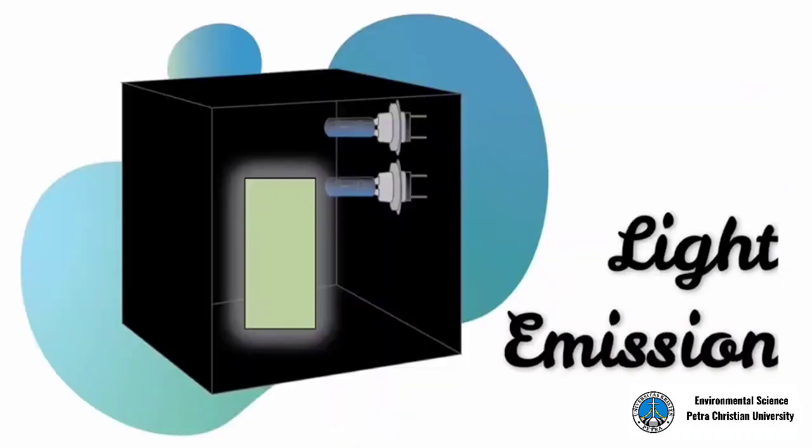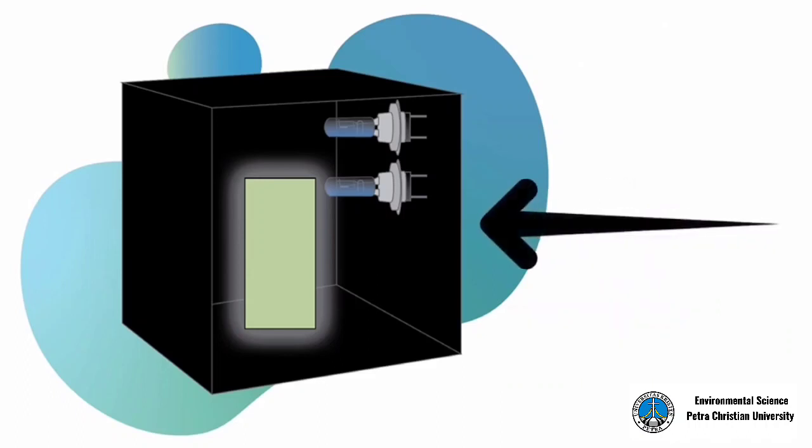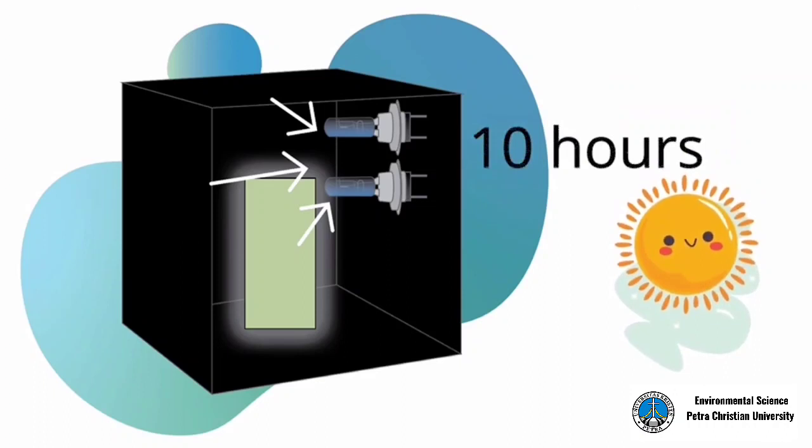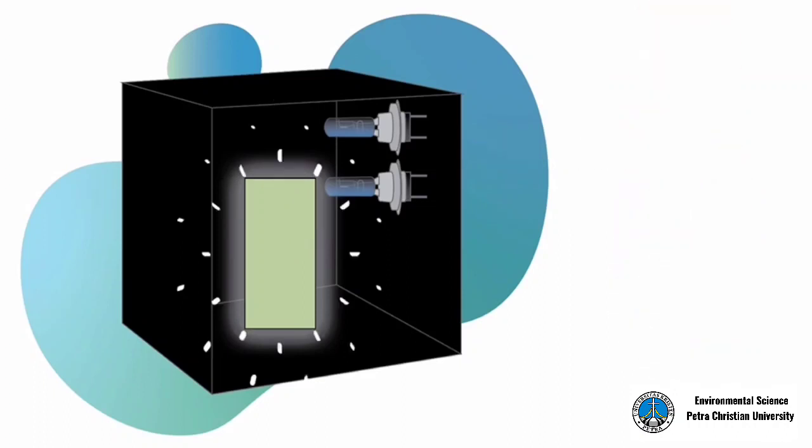Lastly, there's a light emission test where the glow-in-the-dark concrete is put inside a black box. The sample is lit with xenon lights for 10 hours, which is the effective hours of sunlight per day. Then we observe how long the glow of the sample will last.